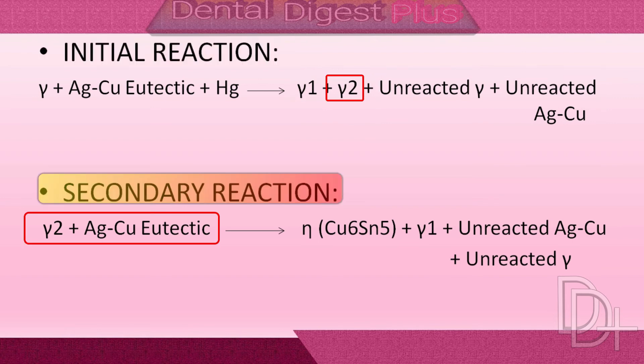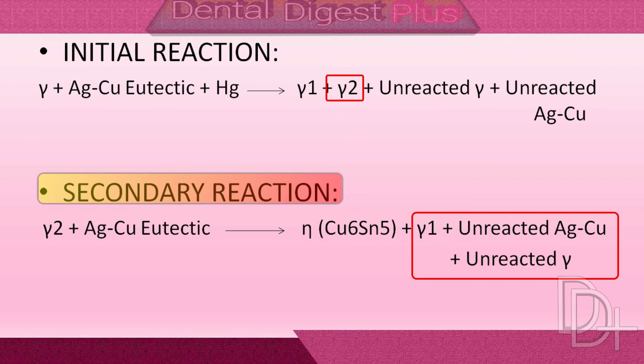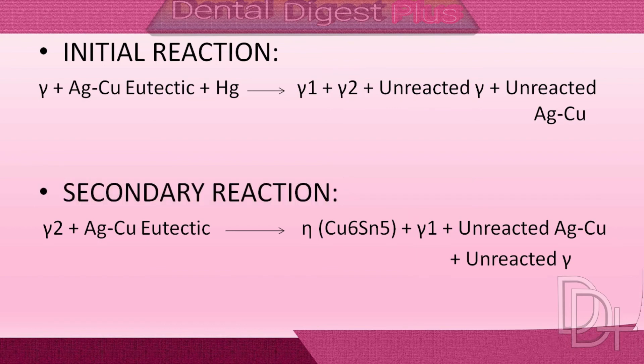Later on, the gamma-2 which was formed in the initial reaction reacts with the silver-copper-eutectic alloy and forms the eta phase. So in the final set amalgam, eta phase and gamma-1 phase form, and unreacted silver-tin particles as well as unreacted silver-copper particles remain in the core of the set matrix.